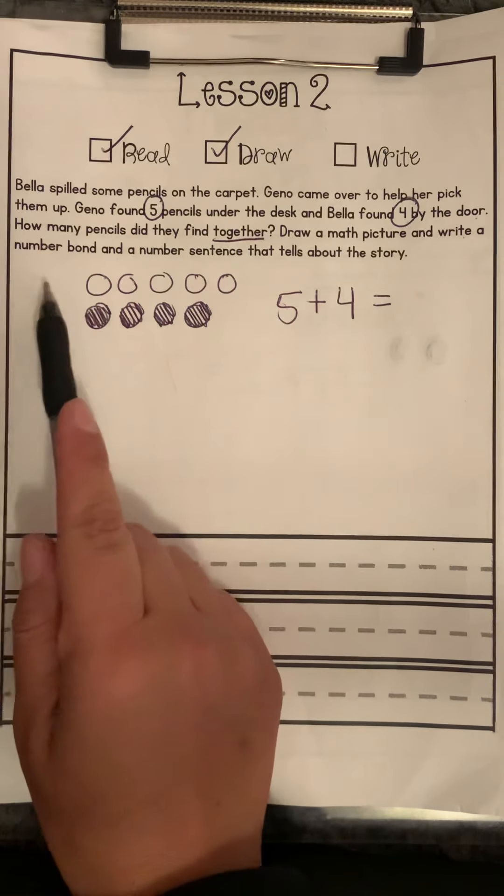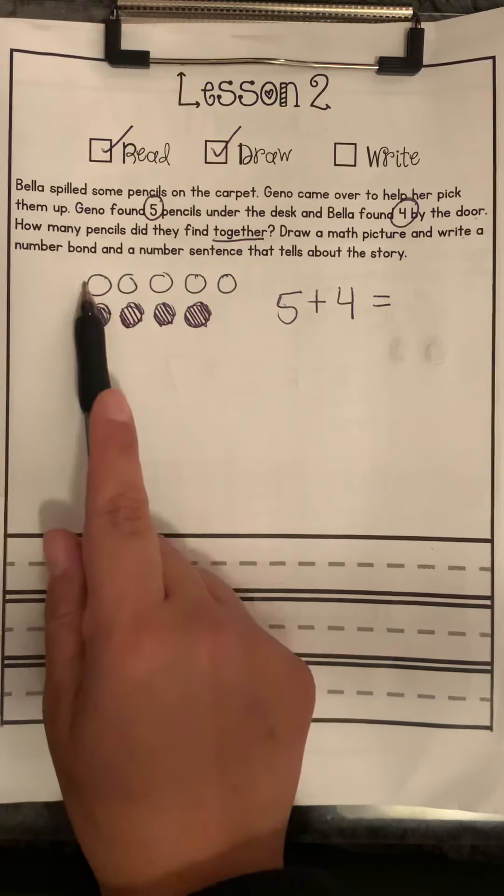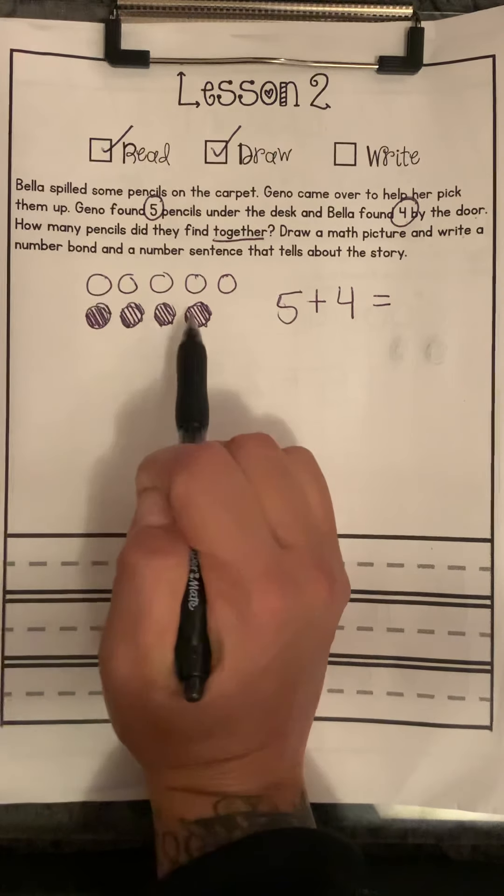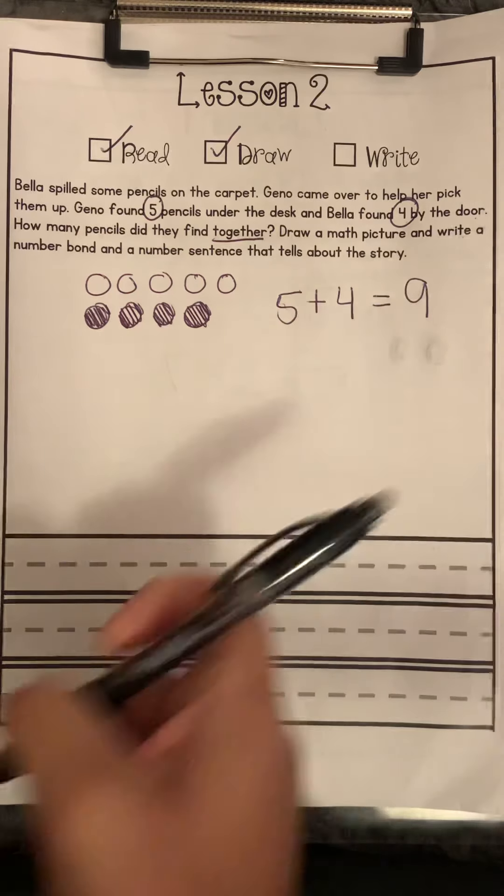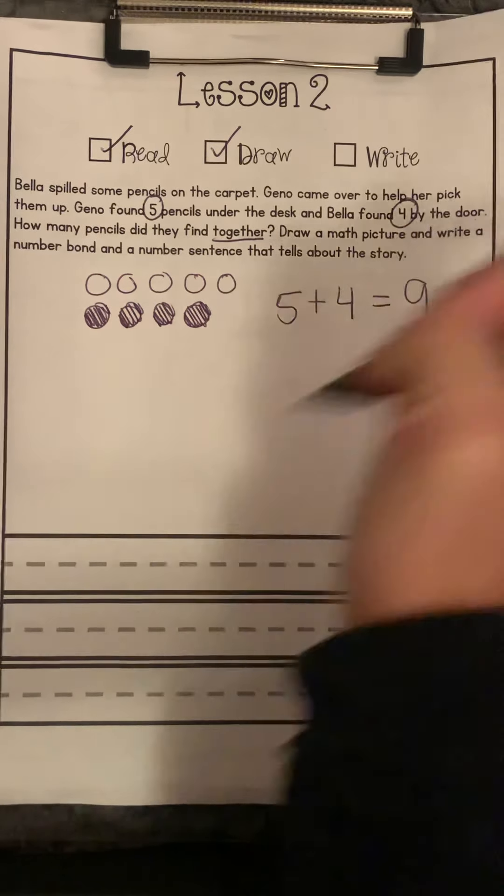We've been practicing counting on, and we know that in our five row groups that the top is five. So we can say five, six, seven, eight, nine. All together, Bella and Gino have nine pencils.